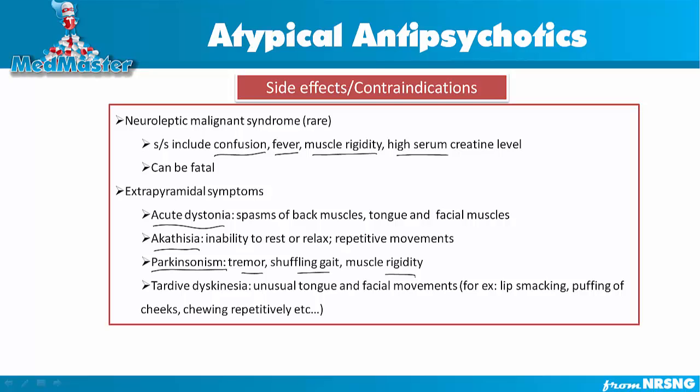The fourth extrapyramidal symptom is tardive dyskinesia, which involves unusual tongue and facial movements such as lip smacking, cheek puffing, and repetitive chewing. It can be hard to distinguish tardive dyskinesia from akathisia. A helpful tip: if the repetitive movements involve the lips or face, think tardive dyskinesia; if the repetitive movements involve the hands or legs, think akathisia.